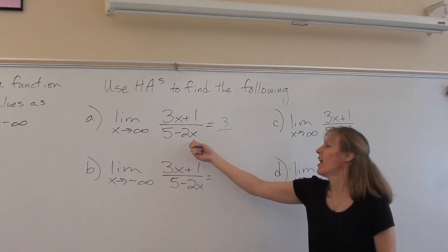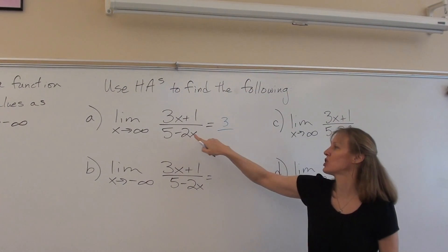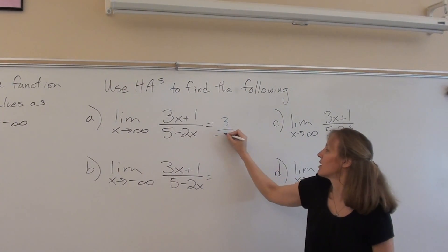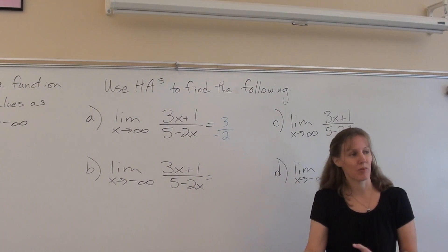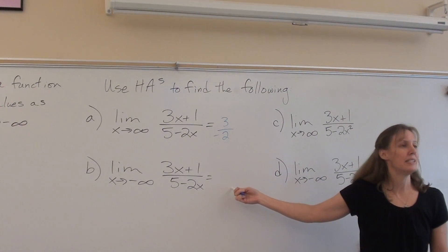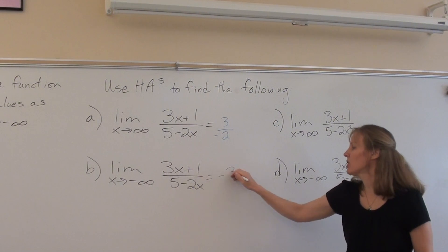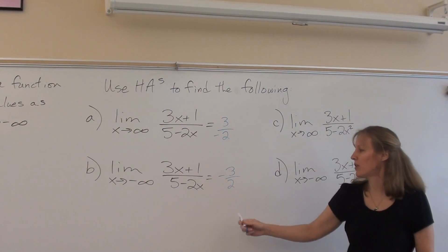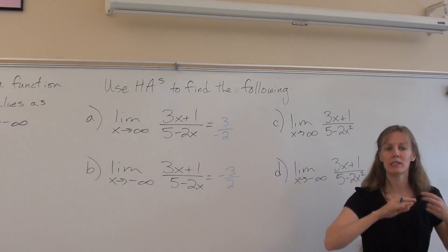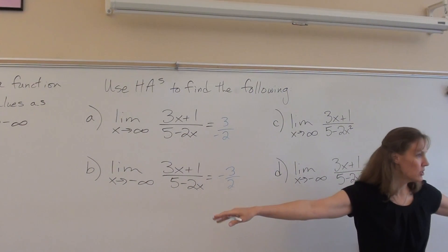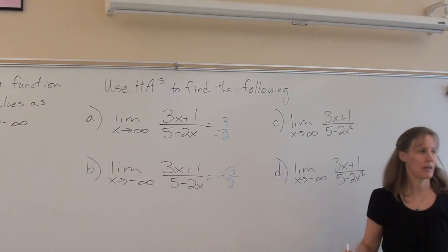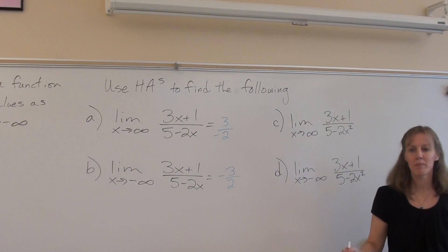Because the leading coefficient is the coefficient of the variable with the highest exponent, right? So this would be 3 over negative 2, which you could also write as negative 3 halves or however you want to write it. What about this one? Ditto. They are the same. When you are talking about a simple rational function, when you have a polynomial over a polynomial, there's just one horizontal asymptote and it's the same in both directions. So the limit as you approach positive infinity and negative infinity will be the same answer.